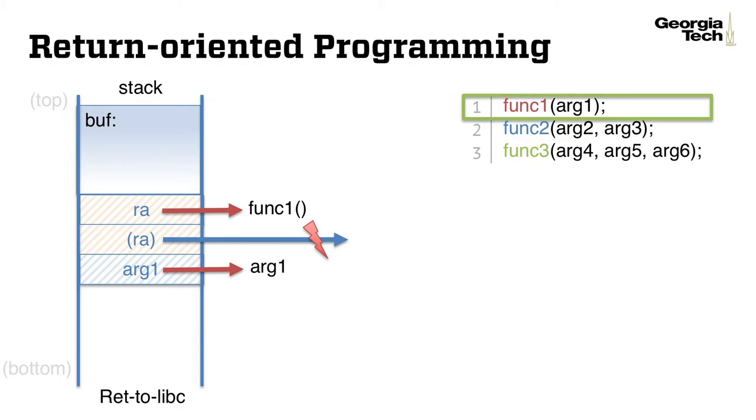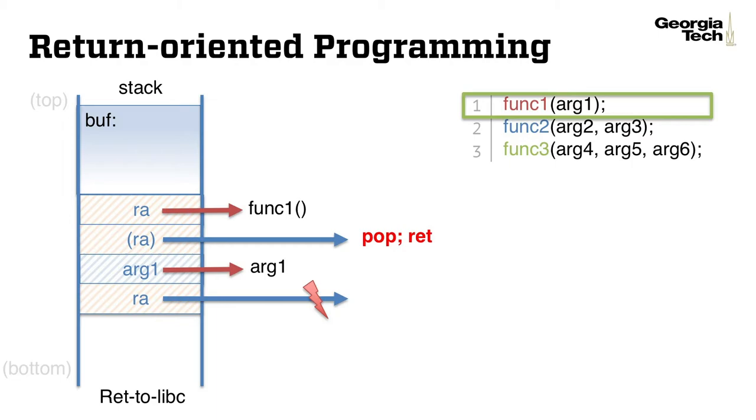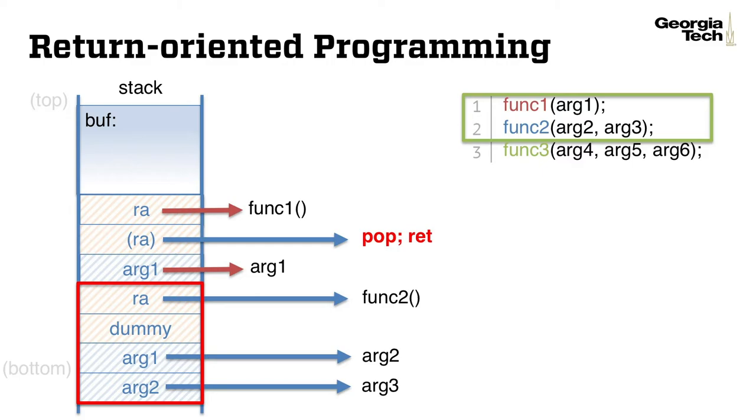Return-oriented programming is proposed to solve this particular problem by generalizing the way we construct the payload. After executing function 1, instead of redirecting directly to function 2, we chain its execution to a set of instructions called a gadget. In particular, we redirect its execution to pop and return instruction, which allows us to clear argument 1, and again, redirect its execution flow.